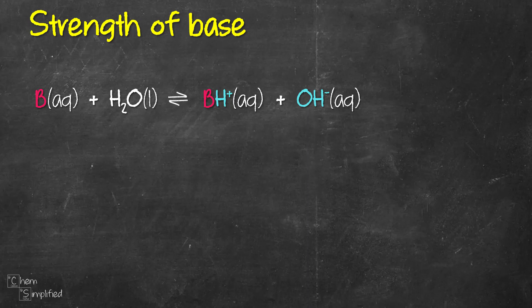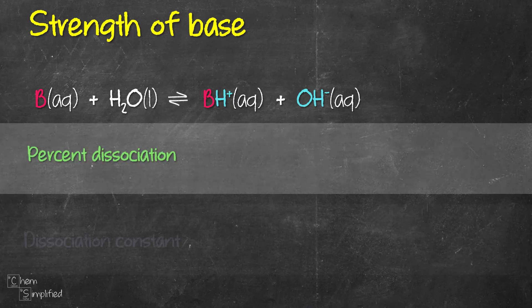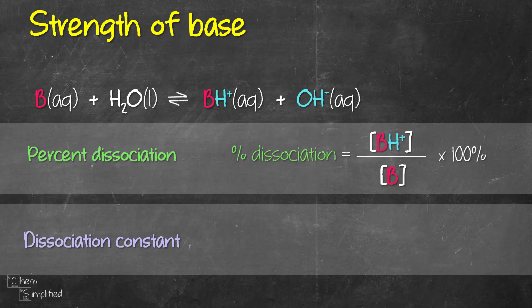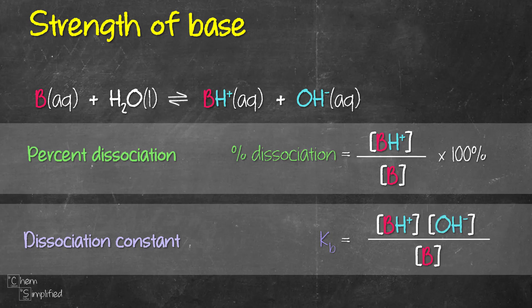Back to the strength of the base — we can use two types of measures: percent dissociation or the dissociation constant. Percent dissociation is calculated by taking the concentration of the conjugate acid (BH+) divided by the initial concentration of the base (B), multiplied by 100%. The base dissociation constant is abbreviated Kb. We calculate Kb by multiplying the equilibrium concentrations of BH+ and OH-, then dividing by the equilibrium concentration of the base.